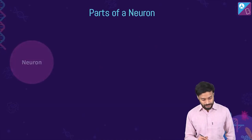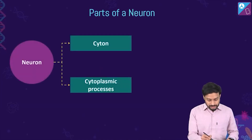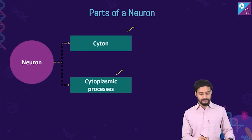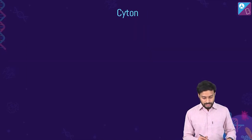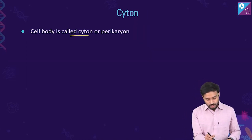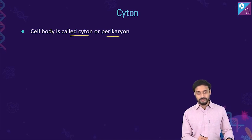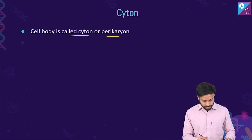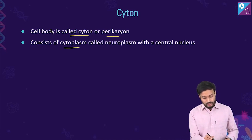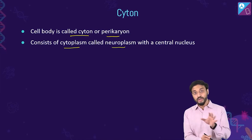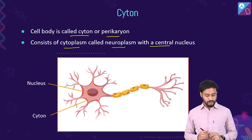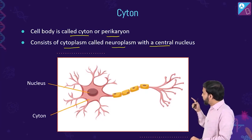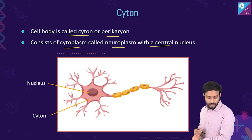The neuron has two major parts: the cyton and the cytoplasmic processes. The cell body is called the cyton, or pericarion, or soma. It consists of cytoplasm called the neuroplasm and contains a central nucleus.